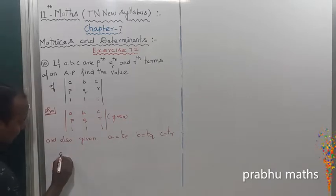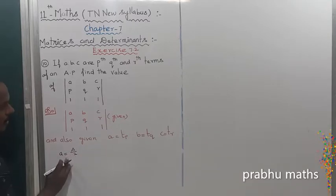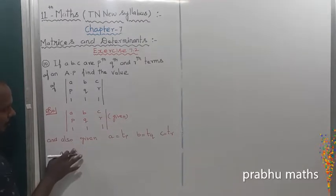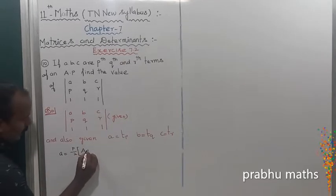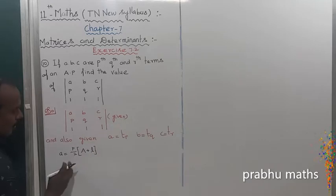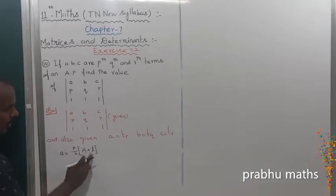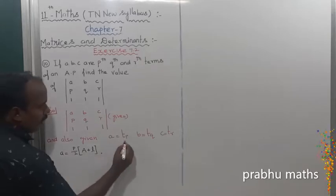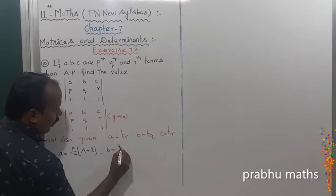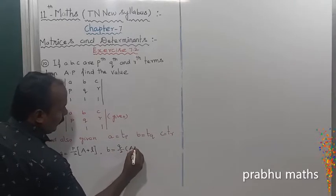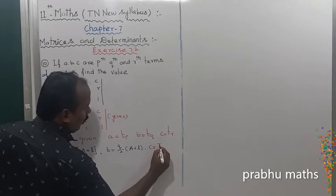So S equals n/2(a + l). The p-th term means p/2(a + l), the first one. Next, b equals q/2(a + l). Next, c equals r/2(a + l).